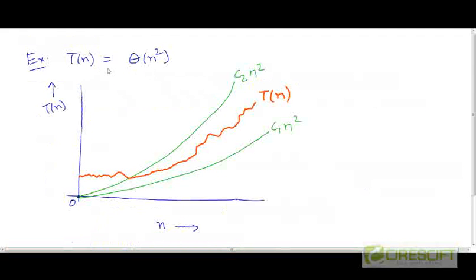So to say that T is Θ(n²), there must exist two other curves, which I have shown in green color over here. One curve, which is c1n², must be less than or equal to T, and the other curve must be greater than or equal to T. So it should be possible to sandwich T between two constant multiples of n².